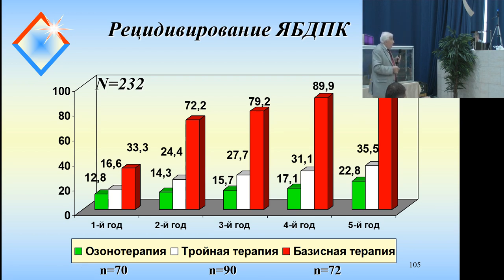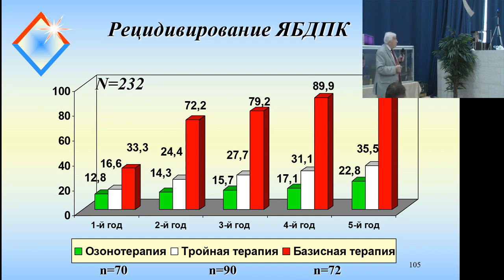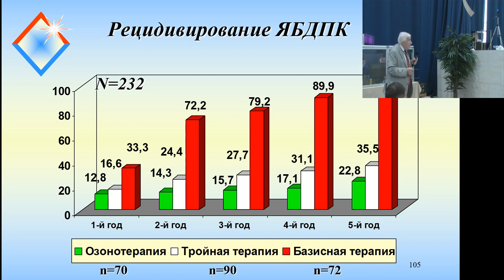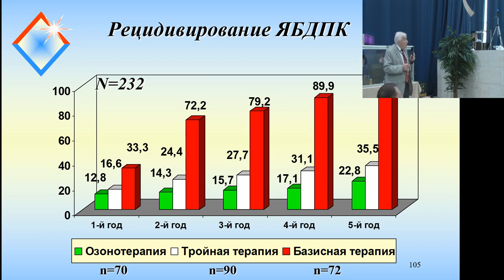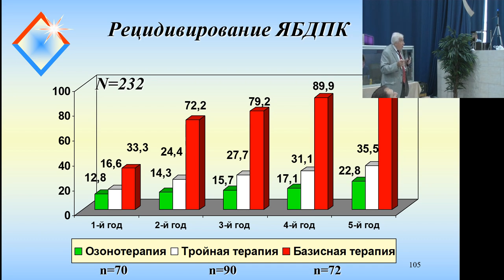Now the most interesting part — recurrence. Recurrence of ulcer disease, taken for the duodenum: with ozone therapy (green bars), the first year is 12%, second year 14%, third year 15%, fourth year 17%, fifth year 22.8% — approximately 23%. So 23% recurrence over 5 years. With conventional therapy, 97% recurrence of peptic ulcer disease occurs. With MASH (Maastricht) therapy, approximately 75–80% achieve cure. Ozone therapy is, without doubt, in first place.